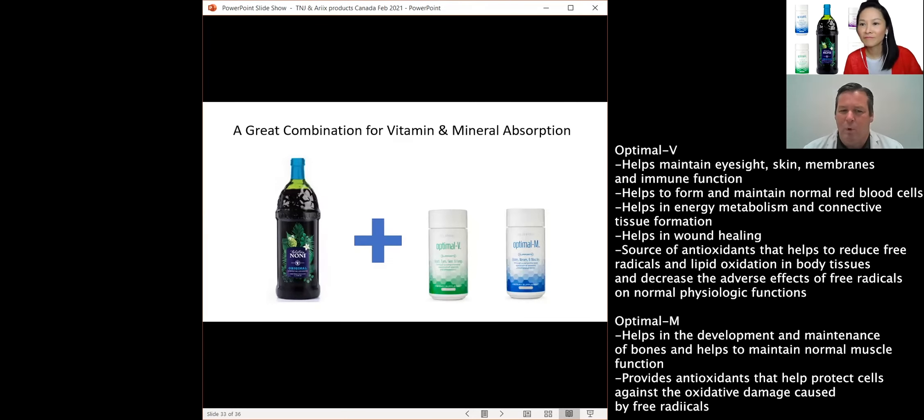So Noni is a wonderful fruit, but it's lacking in vitamin D. It's lacking in vitamin E and some of these other things. And so combining it with Optimal V and Optimal N is wonderful. And again, helps improve bioavailability. You should use these two together. This is a no-brainer combination as well.